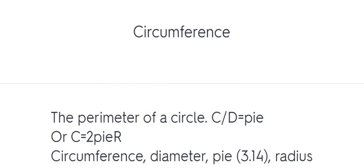Circumference. The perimeter of a circle. C equals πD or C equals 2πR. Circumference, diameter, pi, radius.